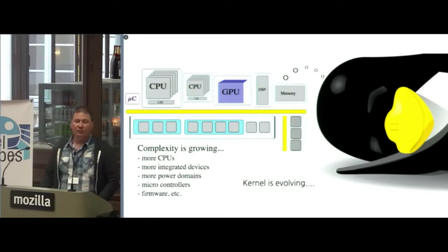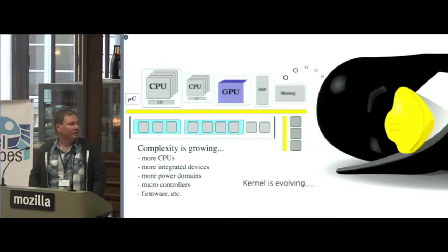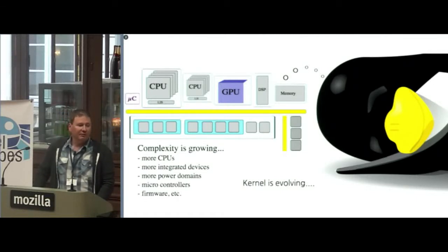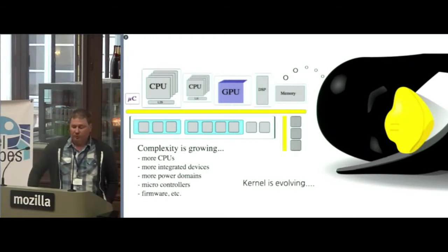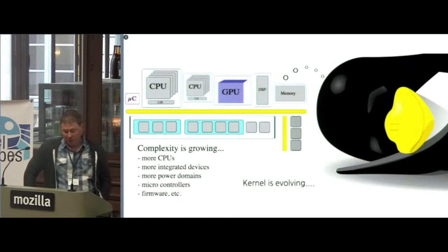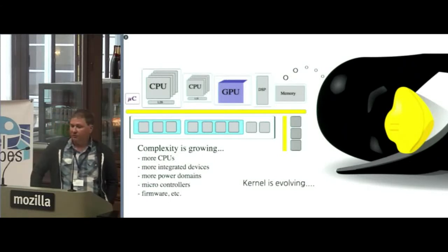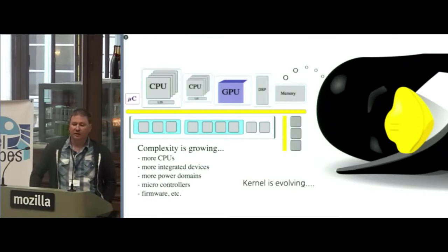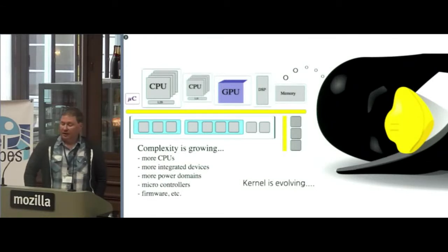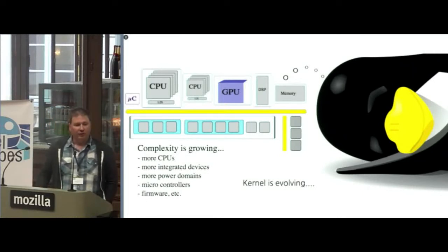I work a lot with embedded SoCs where there's quite a bit of growing complexity in the hardware. As a result, the kernel complexity is kind of having to evolve to deal with these new types of hardware. They're packing more and more stuff into these SoCs — more CPUs, more types of CPUs, GPUs, all sorts of I/O devices. An interesting development is what are called power domains or power islands, where there's different ways of grouping different blocks together that can be power gated independently. I'm going to overview how the kernel's dealing with this complexity and how it's evolved over the years.